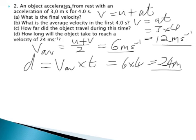Question D. How long will the object take to reach a velocity of 24 metres per second? We need to rearrange the equation V equals U plus AT to make T the subject. So if we did that, we'd do this. T equals V minus U divided by A.